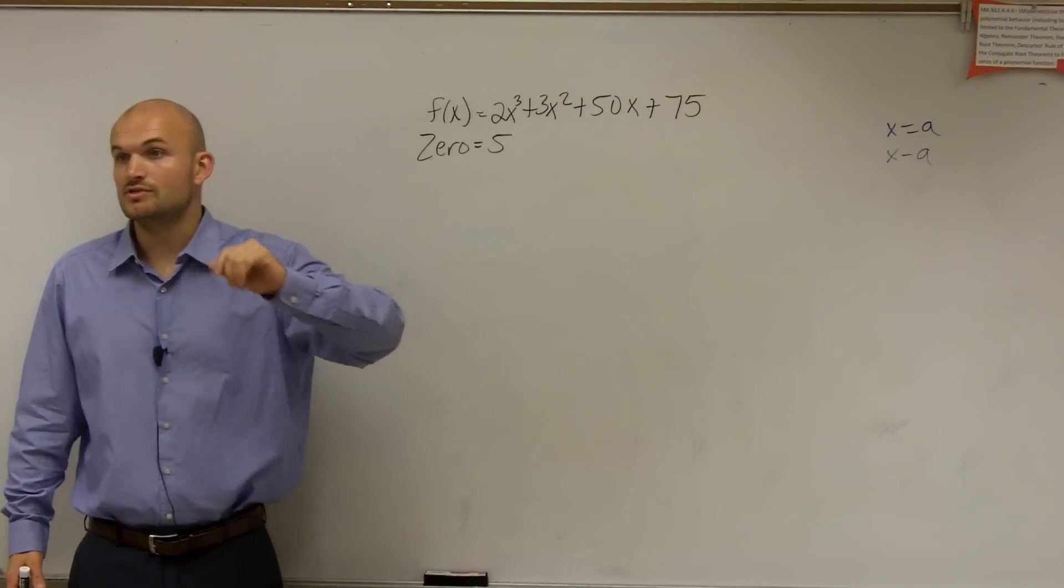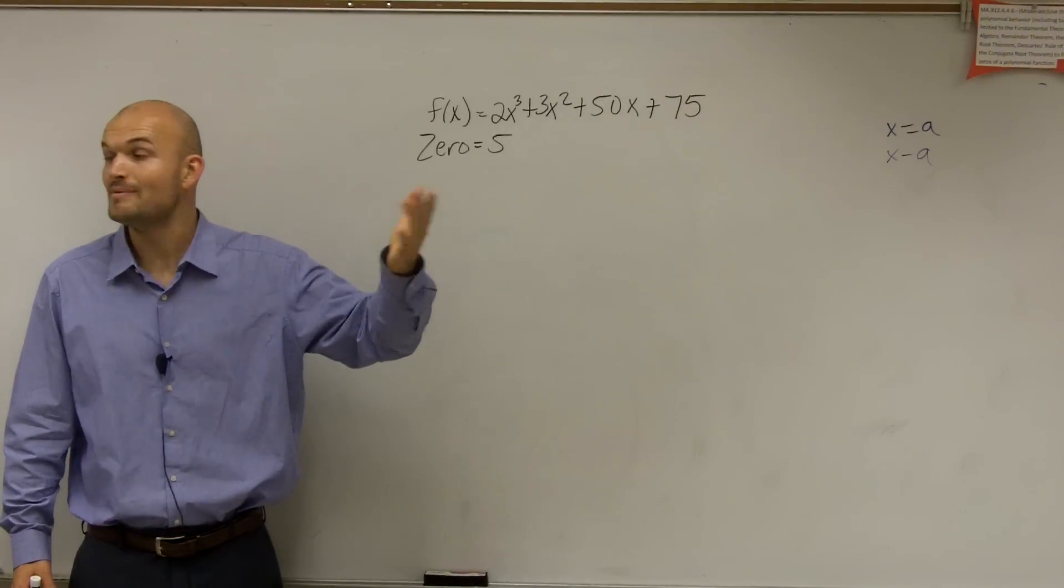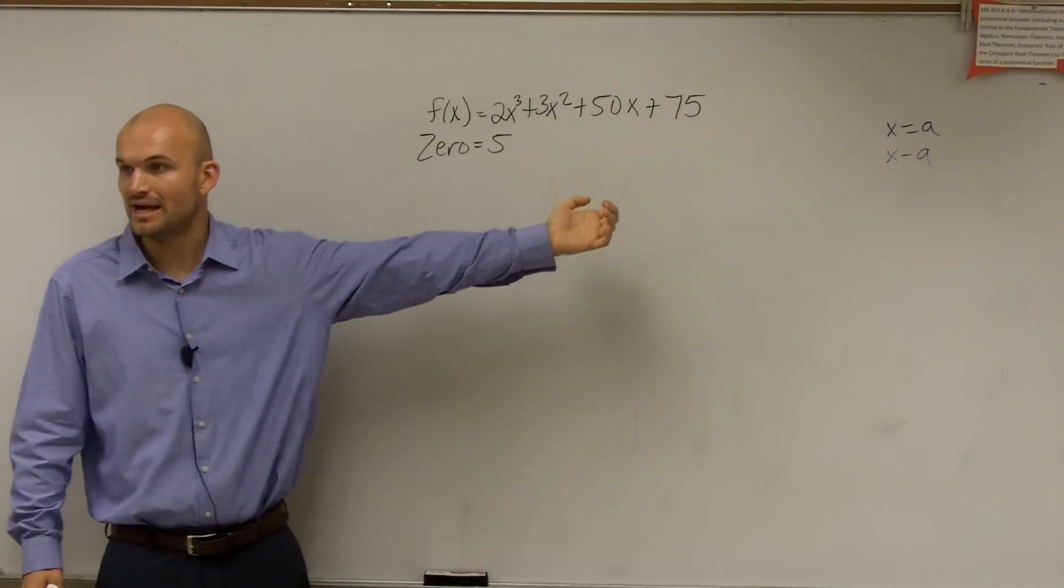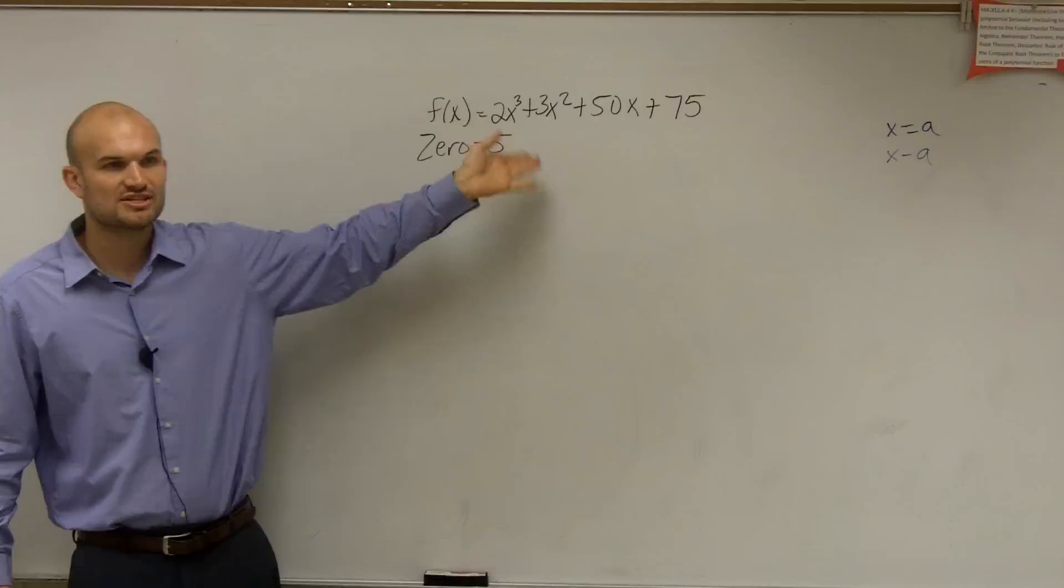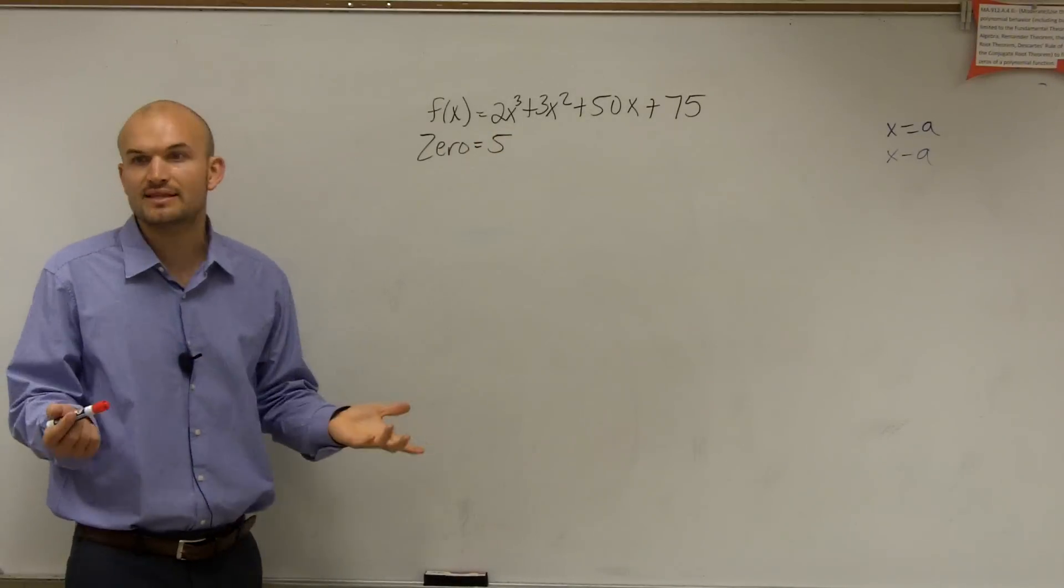You could use synthetic division. You could also use the remainder theorem, right? Where you evaluate this function at 5, and if you got 0, then you know it would be a zero of it. But we want to use synthetic division because we want to see the resulting factor. So I would use synthetic division.